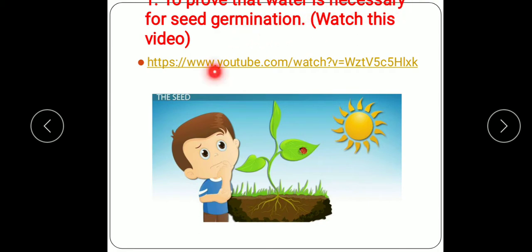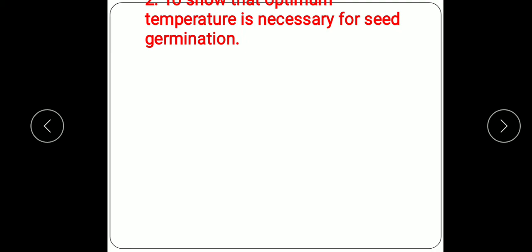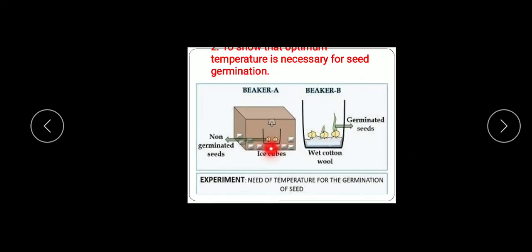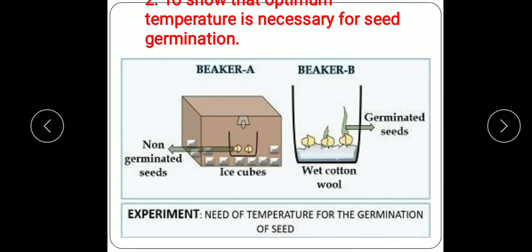There is a link provided to watch a video of this experiment. Next, to show that optimum temperature is necessary for seed germination: we will place seeds at two different temperatures. We can take an additional beaker for high temperature. In beaker A, we maintain very low temperature by placing ice cubes in the box and placing the beaker with seeds inside.